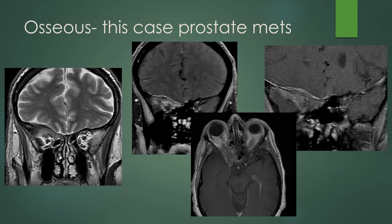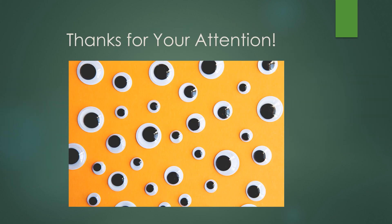Don't forget that osseous lesions can affect the orbit — this case was prostate metastatic disease. It can go to any bone of the orbital walls: the frontal bone, sphenoid bone, anywhere that could affect the orbit. In this case this was a frontal bone metastasis of prostate cancer involving the anterior clinoid process and some sphenoid bone, compressing the orbital apex because the tumor involves all of the structures. You can see dural enhancement — it's a dural-based process as well as an osseous metastatic disease, compressing the orbit from the extraconal compartment superiorly. Thank you for your attention.